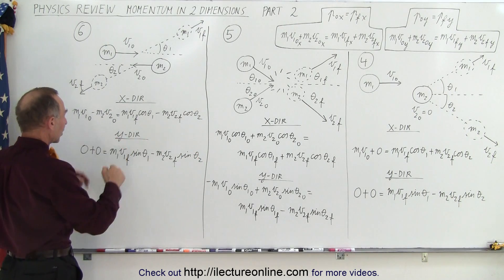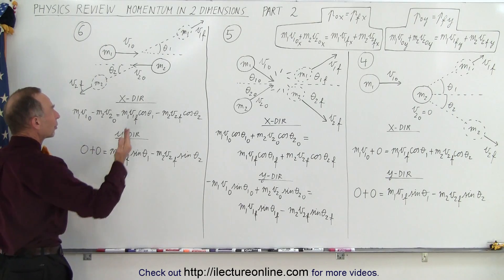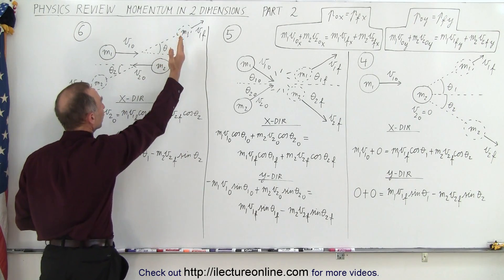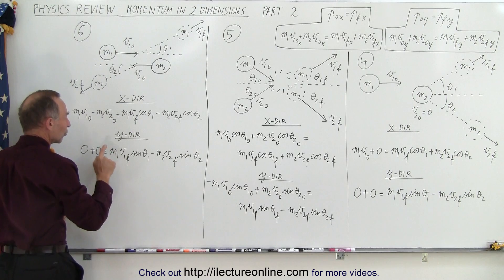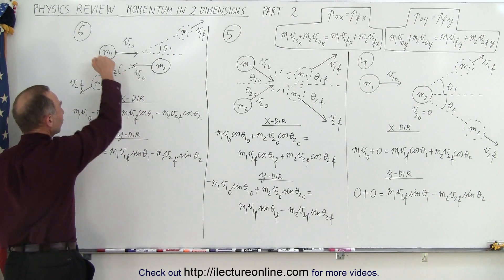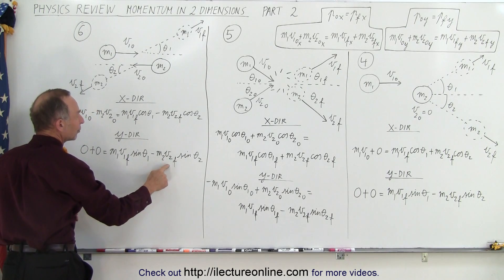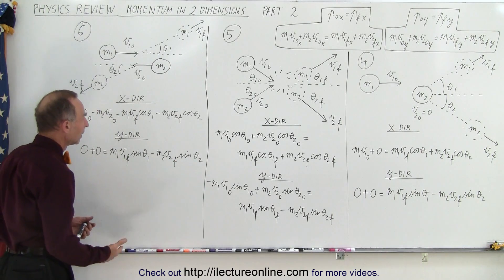Since they're moving initially in the x direction, there's no initial momentum in the y direction. But afterwards, this object has a component moving up and this object has a component moving down, so it's plus M1 V1 final times the sine of the angle, and since it's moving in the negative direction, minus M2 V2 final times the sine of the final angle.